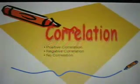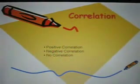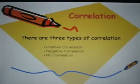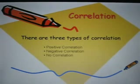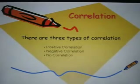Let's take a look at correlation. There are three types of correlation: positive correlation, negative correlation, and no correlation.